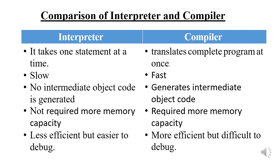While translation of a program by interpreter is less efficient, it is easier to find errors. Considering all these points, there are pros and cons of both interpreter and compiler. It is important to know about both these converter software in order to decide which converter software we should use according to our needs.